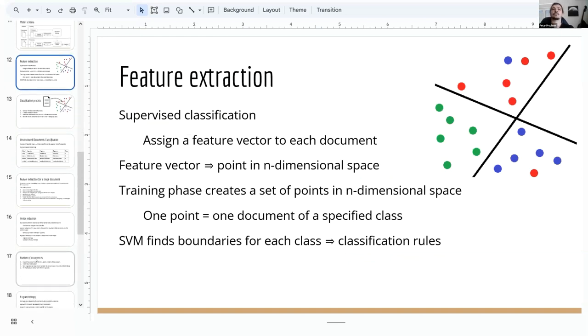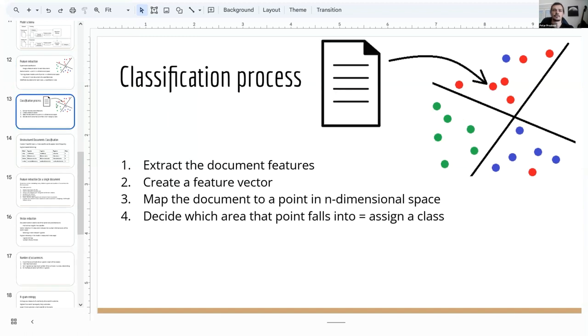Supervised classification requires assigning a feature vector to each document. Feature vector is treated as a point in n-dimensional space, n being the vector size, and during the training phase, classified documents are mapped into n-dimensional space at the positions defined by the feature vector. This creates a set of points where each point represents one document of a specified class. A support vector machine algorithm takes the set and finds the boundaries for each class, effectively producing classification rules. The figure on the right shows a simplified case where we have sets of points in three different colors, and lines define the classification rules. It is not perfect, as we see the blue and red points misclassified, but with proper feature vectors, this can be quite accurate. Classification of new documents is a process of extracting the features of the document, creating a feature vector, mapping the document to a point in n-dimensional space, and deciding which area that point falls into, thus assigning a class to that document.